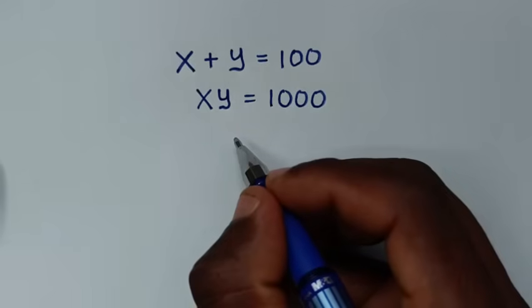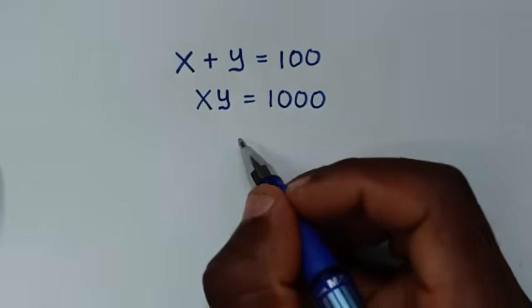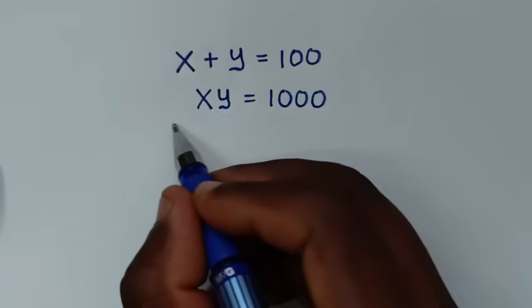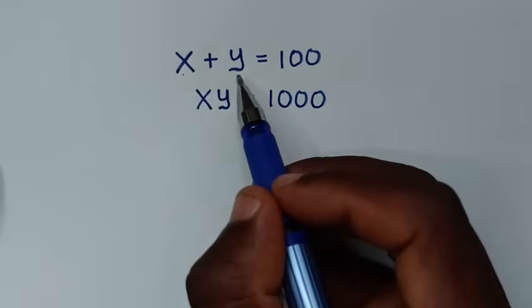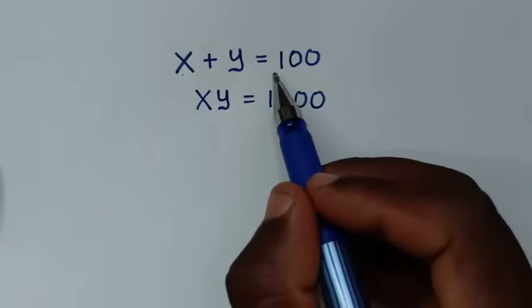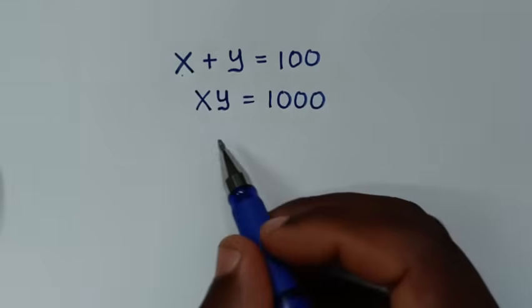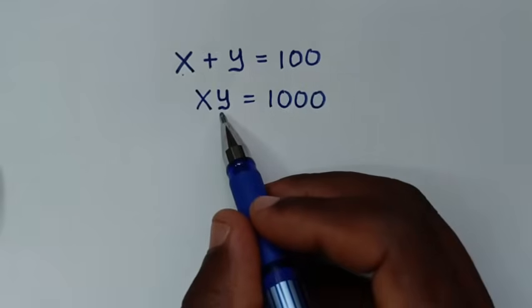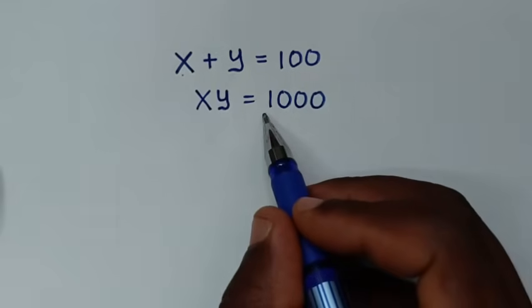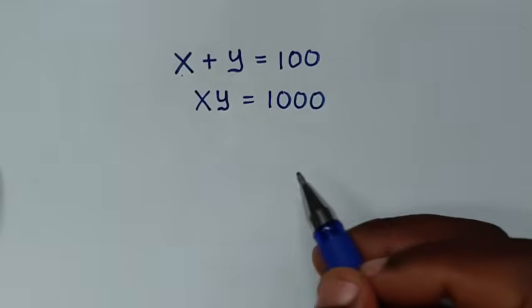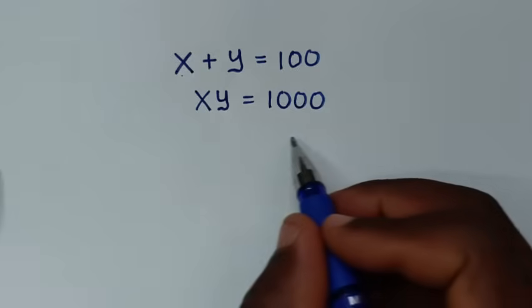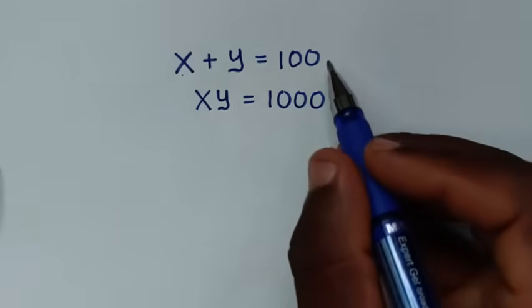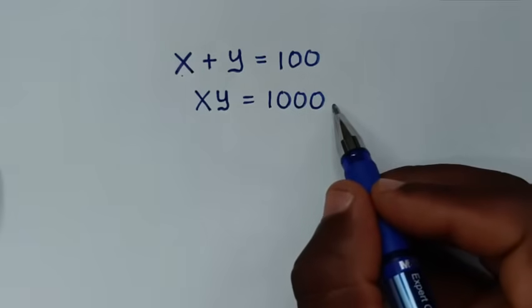Hello, you are welcome to solve this math problem, which is x plus y is equal to 100, x times y is equal to 1000. We need to find the values of x and y from these two systems of equations.